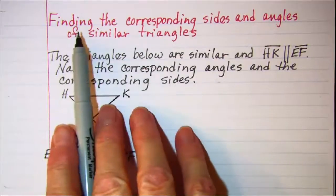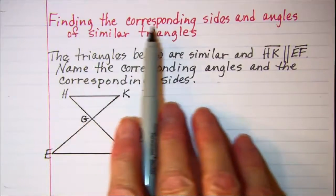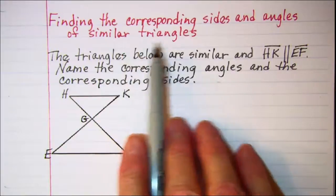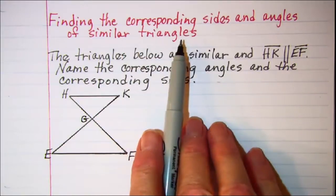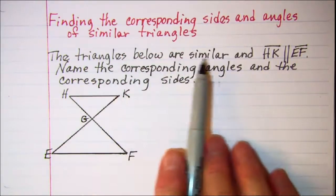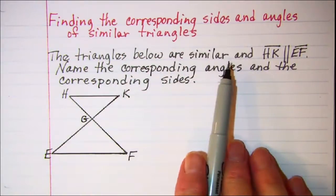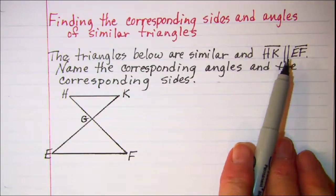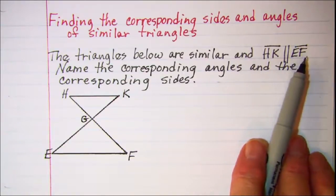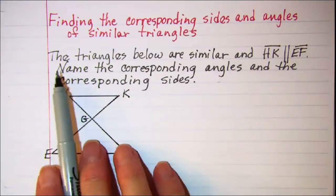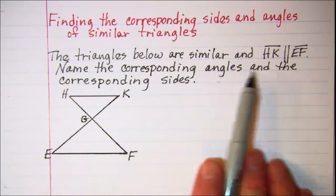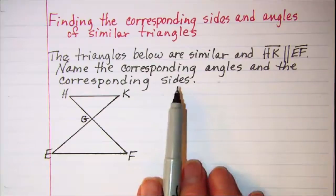In this video we'll be finding the corresponding sides and angles of similar triangles. The triangles below are similar and line segment HK is parallel to line segment EF. We're asked to name the corresponding angles and the corresponding sides.